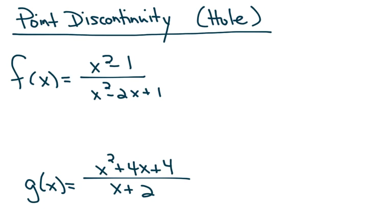We talked about different types of discontinuities — asymptotes are infinite discontinuities. Last year we also introduced you to something called a hole, which was a point discontinuity. A hole or point discontinuity occurs when there is a common factor in the numerator and denominator of a function such that it would cancel, because we like to cancel common factors. But you don't always know if there's a common factor unless you put everything in factored form. So the rule in this unit is that anything that can be factored, you should factor it.